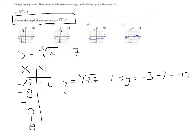Plugging in a negative 8, the cubic root of negative 8 minus 7. The cubic root of negative 8 is negative 2. Negative 2 minus 7 is negative 9.